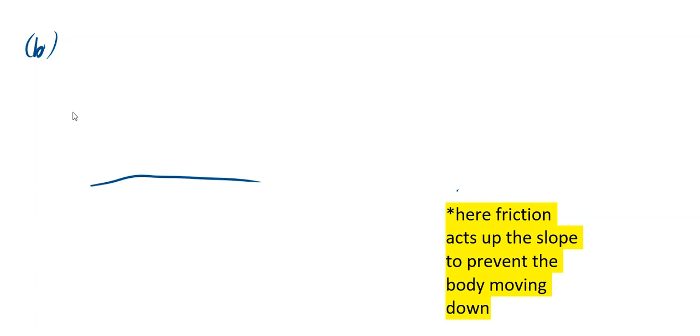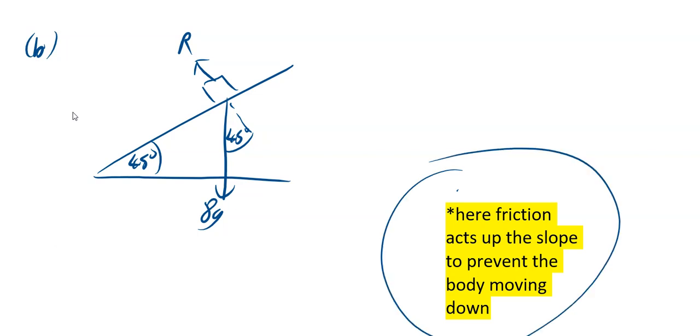Your diagram's similar but not quite the same. You've got your box at 8G, mark on your 45, mark on your normal reaction, mark on the dashed line, and then your 45 again. And to prevent the slipping, first of all, friction acts up the slope, friction acts up the slope to prevent the body moving down.